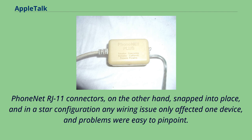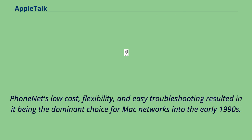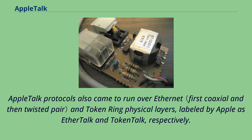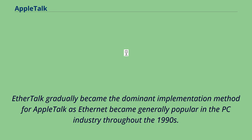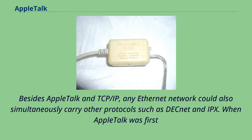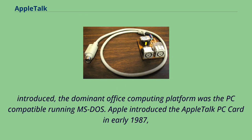AppleTalk protocols also came to run over Ethernet and Token Ring physical layers, labeled by Apple as EtherTalk and TokenTalk respectively. EtherTalk gradually became the dominant implementation method for AppleTalk as Ethernet became generally popular in the PC industry throughout the 1990s. Besides AppleTalk and TCP/IP, any Ethernet network could also simultaneously carry other protocols such as DECnet and IPX. Apple introduced the AppleTalk PC card in early 1987, allowing PCs to join AppleTalk networks and print to LaserWriter printers. A year later, AppleShare PC was released, allowing PCs to access AppleShare file servers.